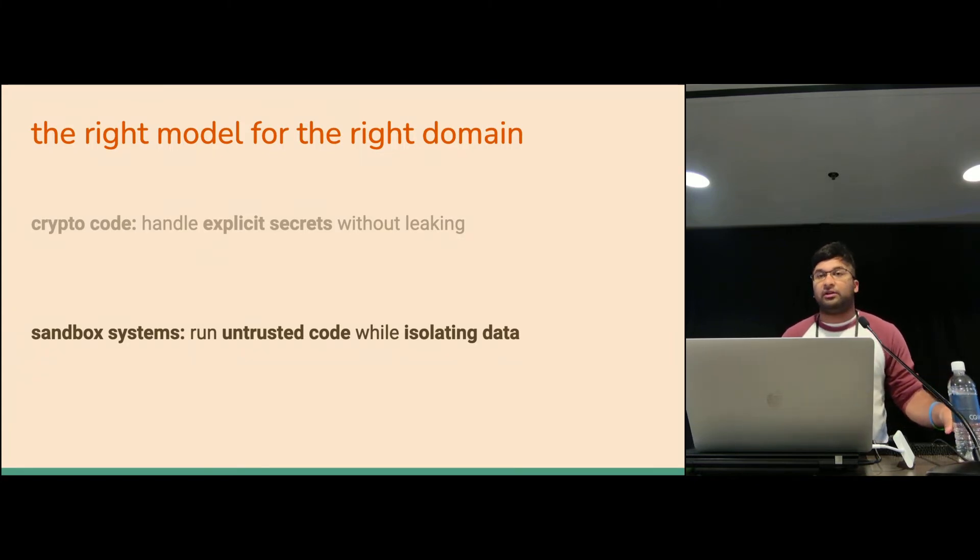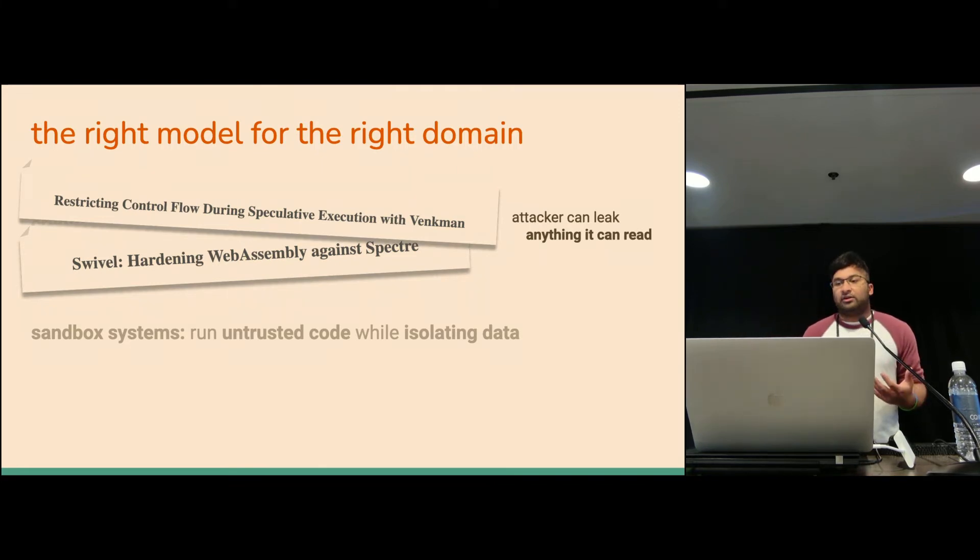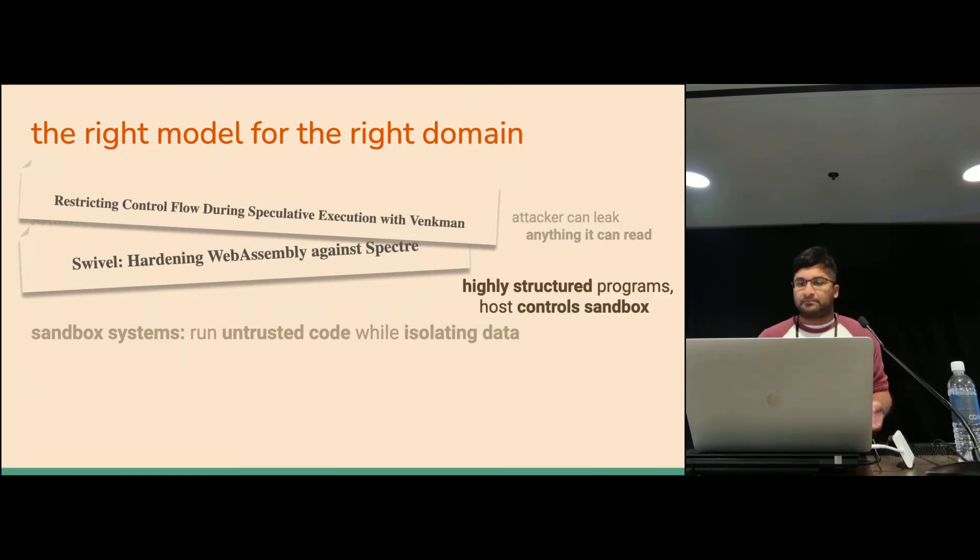Similarly, we see the same sort of thing in sandbox systems. In sandbox systems, you want to be able to run untrusted code while keeping it isolated. So like Linux eBPF, like I mentioned earlier, or in your browser, JavaScript WebAssembly, you have code that could be potentially malicious and you want to prevent it from accessing any data from elsewhere in the system. Tools like Venkman and Swivel build on top of, again, existing sandbox security properties that were developed in sequential models. We assume that the attacker can leak anything that it reads. We don't actually care in this case about whether you're leaking via control flow or memory accesses or something else. It's just if the attacker can access it at all, that's bad.